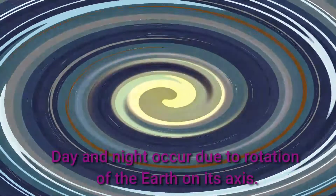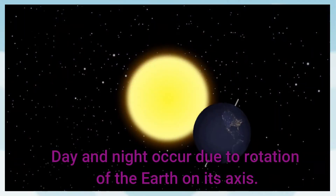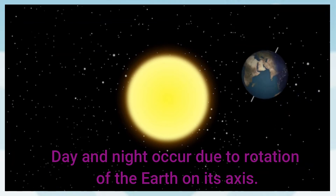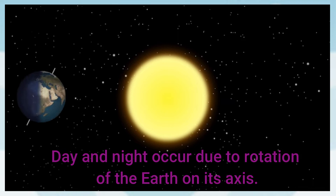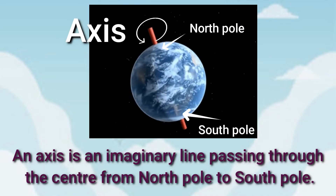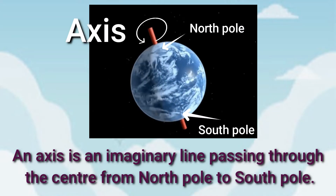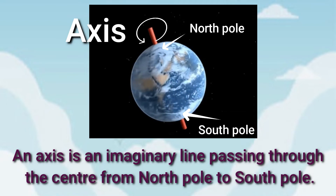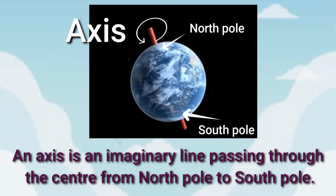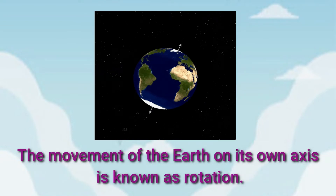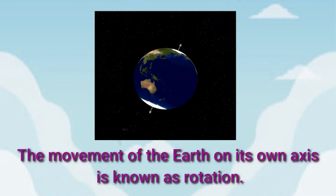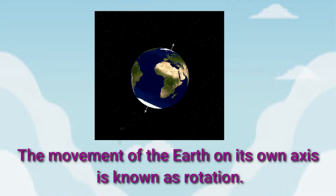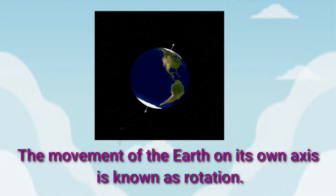Day and night occur due to rotation of earth on its axis. An axis is an imaginary line passing through the center from north pole to south pole. The movement of the earth on its own axis is known as rotation, which causes day and night.